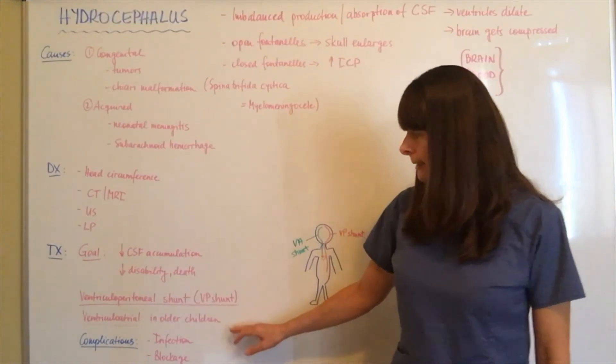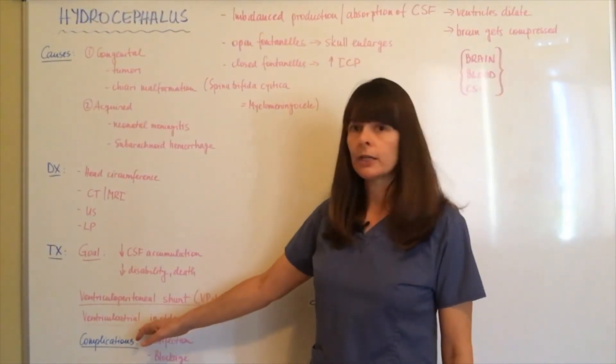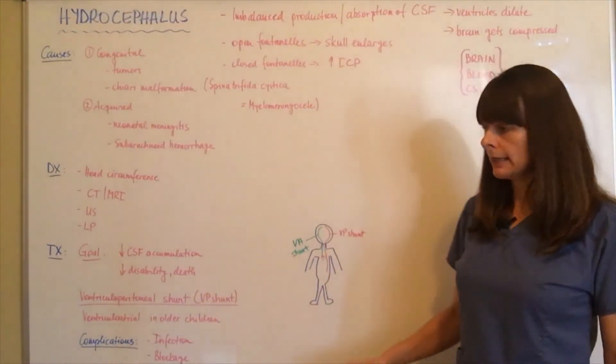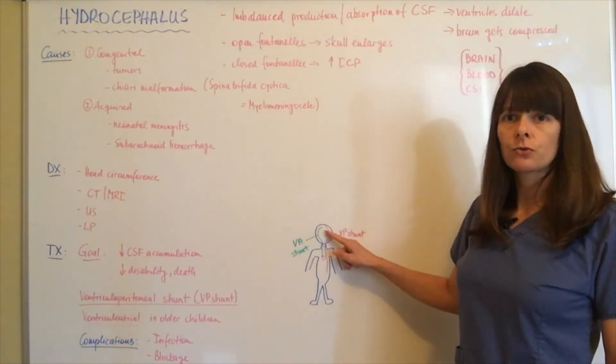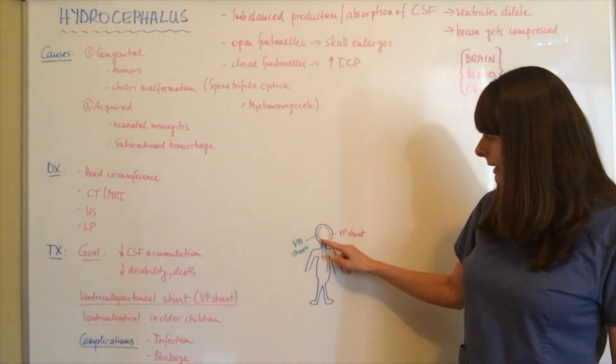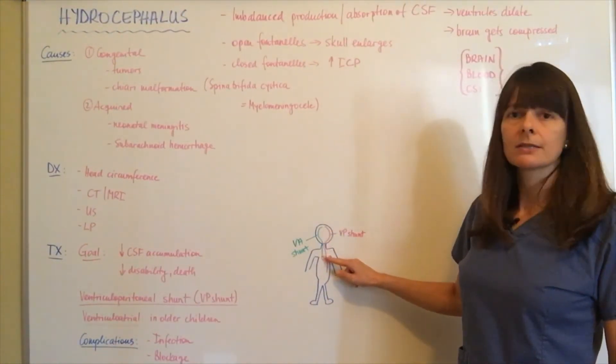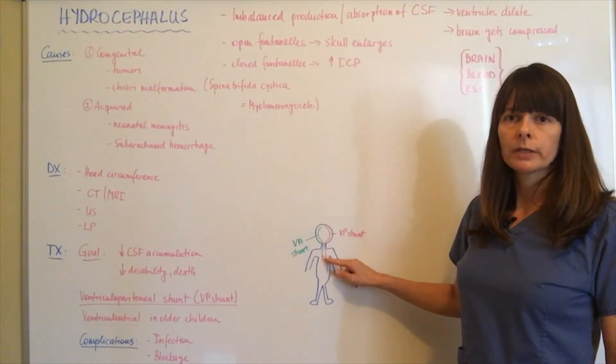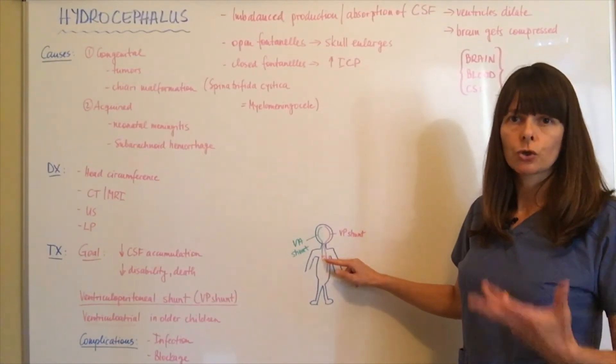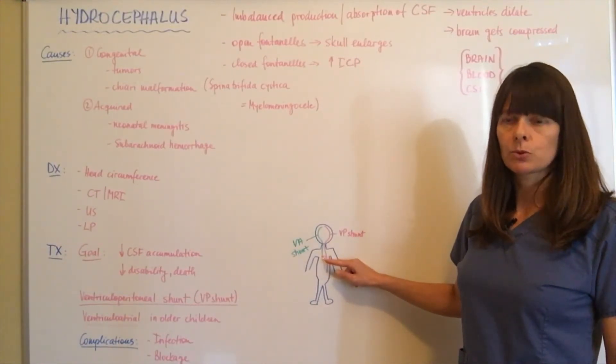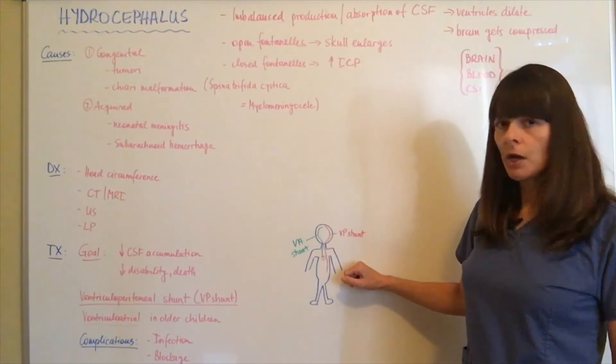If children need a shunt for hydrocephalus and they're a little bit older, this might be a ventriculoatrial shunt. Basically again stemming from the ventricles of the brain, the shunt now ends up inside the right atrium. The CSF enters the bloodstream, is circulated throughout the blood, and then reabsorbed by the body.